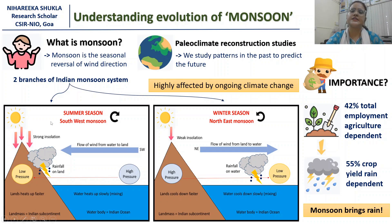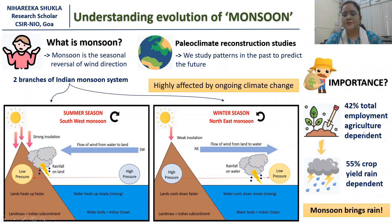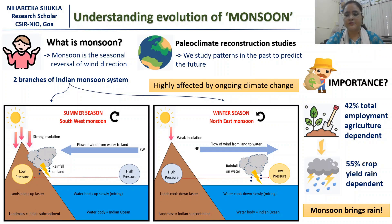Therefore, it is known as the southwest monsoon. The exact opposite happens during the winter season, which is known as the northeast monsoon. This monsoon system is highly affected by ongoing climate change, and it affects us because in India, 42 percent of employment is agriculture dependent.